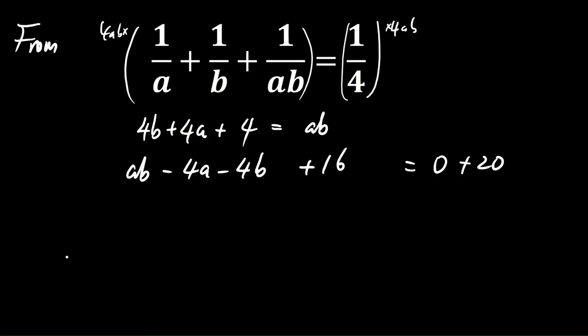And we can factorize this as (a - 4)(b - 4). The right-hand side equals 20. So 20 can be written as 1 × 20, 2 × 10, and 4 × 5.